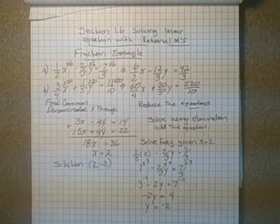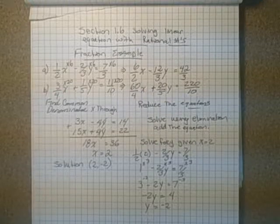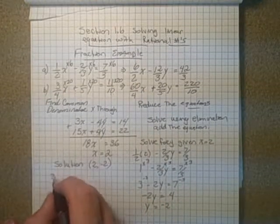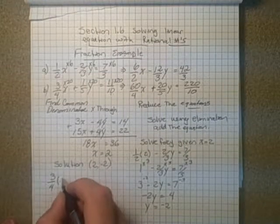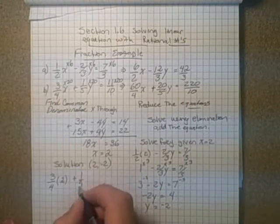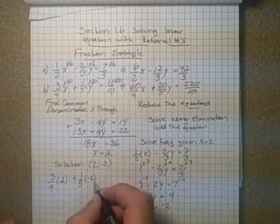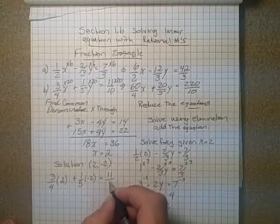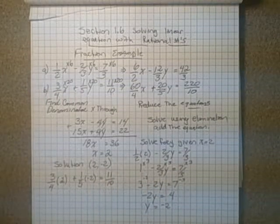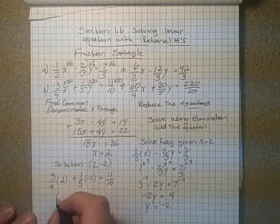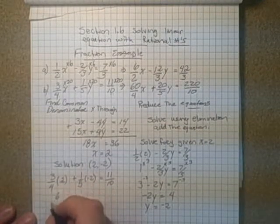And our last step, then, is to reassure ourselves by a check that that would be correct. And we'll use the other equation. So three-quarters of x, which is 2, is going to be added to one-fifth of negative of y, which is negative 2. And that's going to give us eleven-tenths.